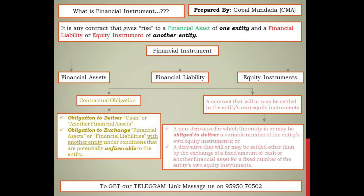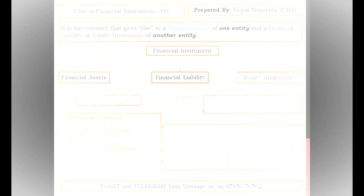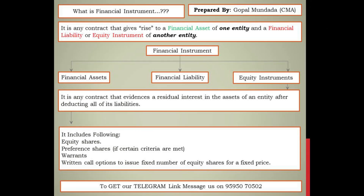After understanding financial assets, we discuss financial liabilities. It is easy to understand if you understand the contractual right and the contract settled in an entity's own equity instrument from the financial asset definition. The key difference is: contractual right under financial assets is replaced with contractual obligation in financial liabilities, and the obligation to receive is replaced by obligation to deliver. The remaining parts are the same.